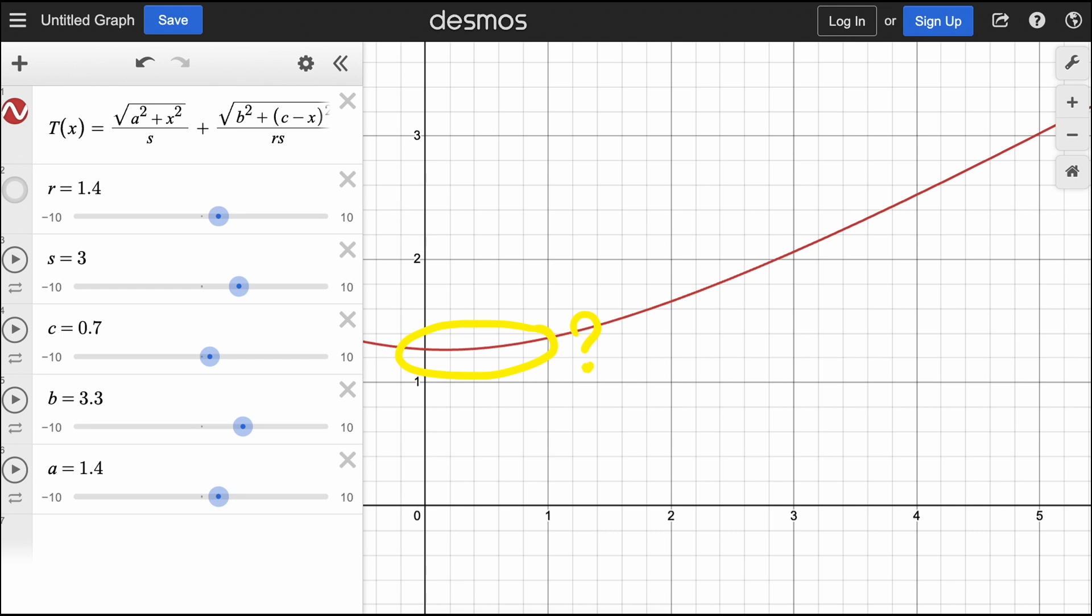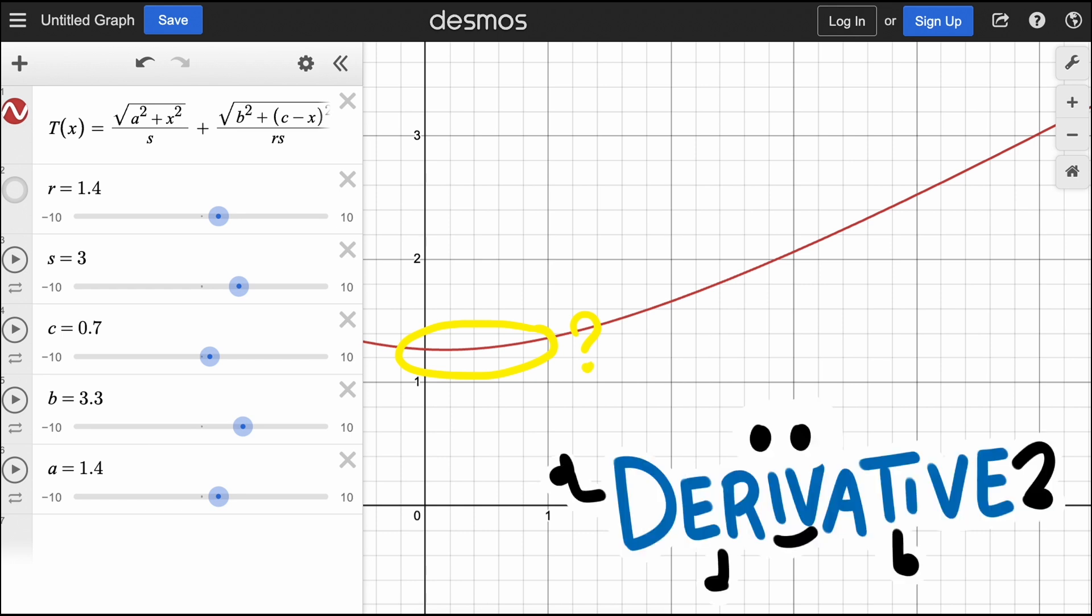Finding the exact minimum value, though, calls for our handy friend, the derivative. Taking the derivative of this equation allows us to solve for extreme values on the curve by solving for x when the derivative, or the instantaneous rate of change, or the slope of our graph, is zero.